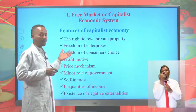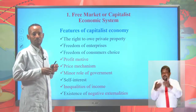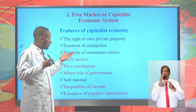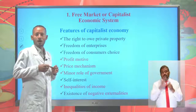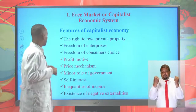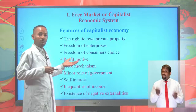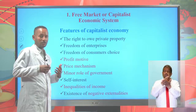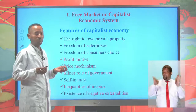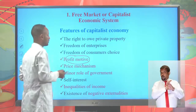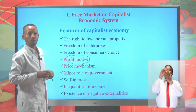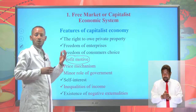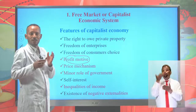Another feature is freedom of enterprise — there is flexibility under this system, and everybody can produce whatever they want. There is also freedom of consumers' choice, meaning consumers can buy whatever they want. Another feature is profit motive — individuals can get profit, which enables more production and leads to efficiency. This profit motive increases productivity for entrepreneurs. There is also a price mechanism, where price is used to allocate resources and determine the demand and supply of a commodity.